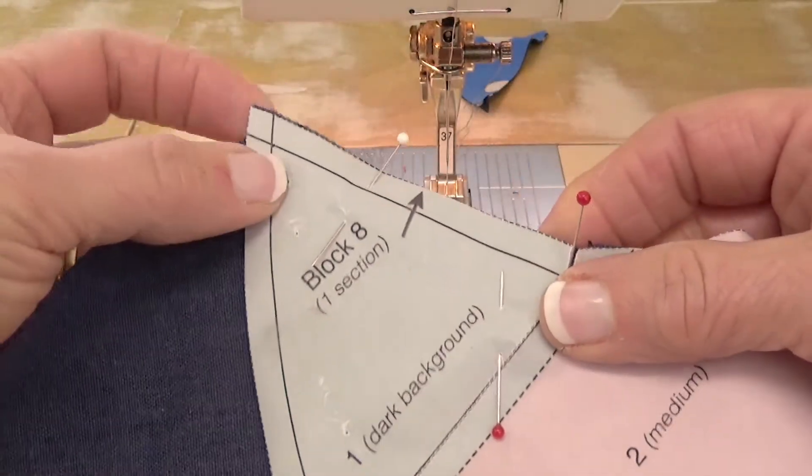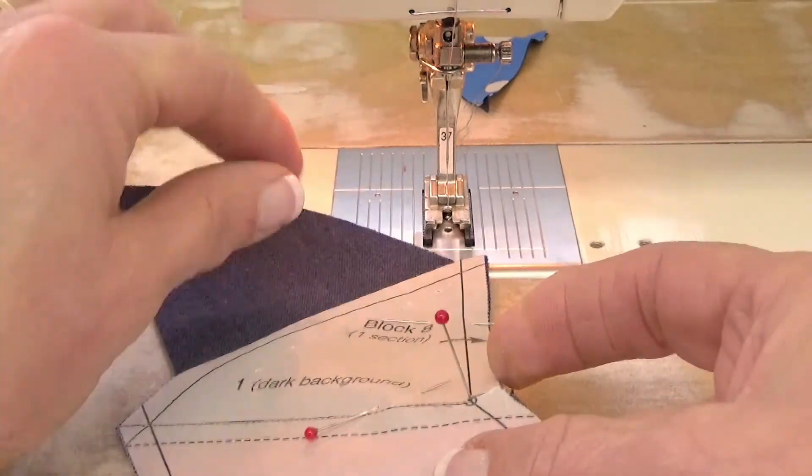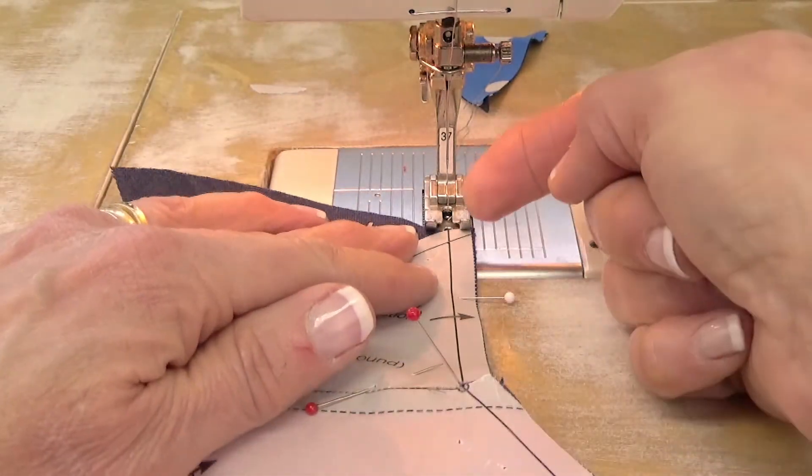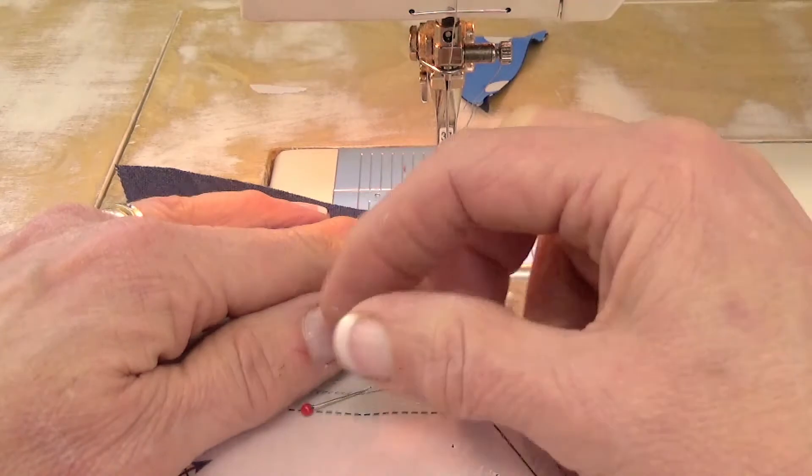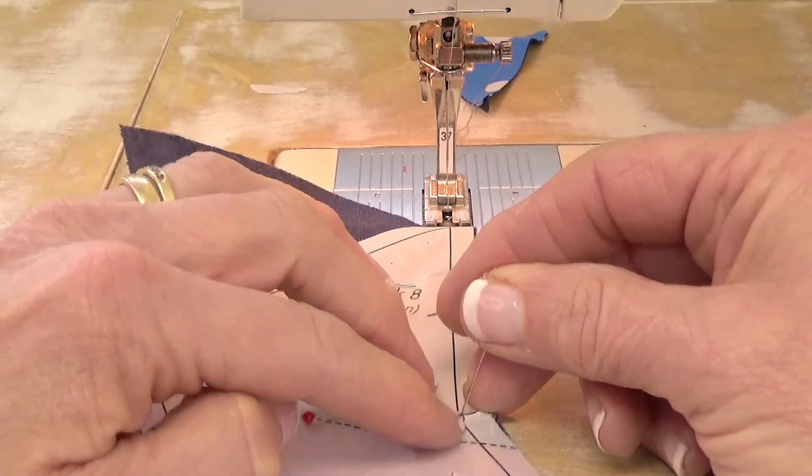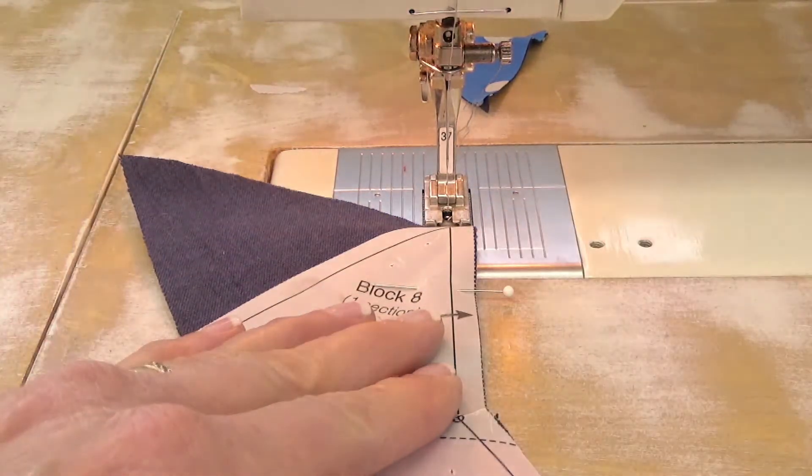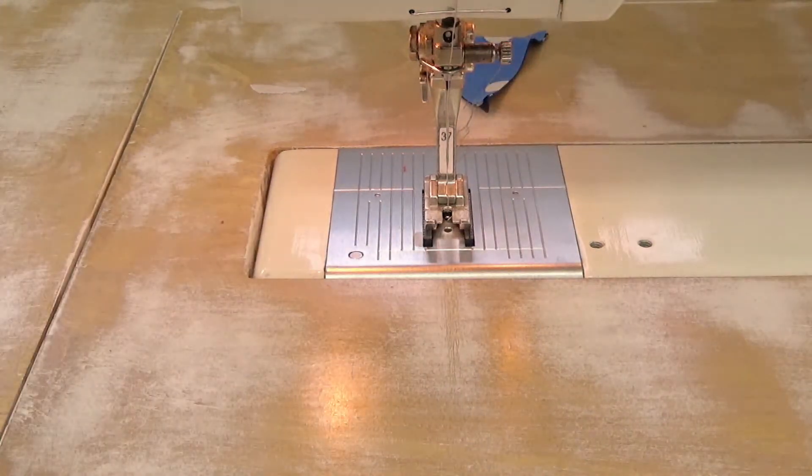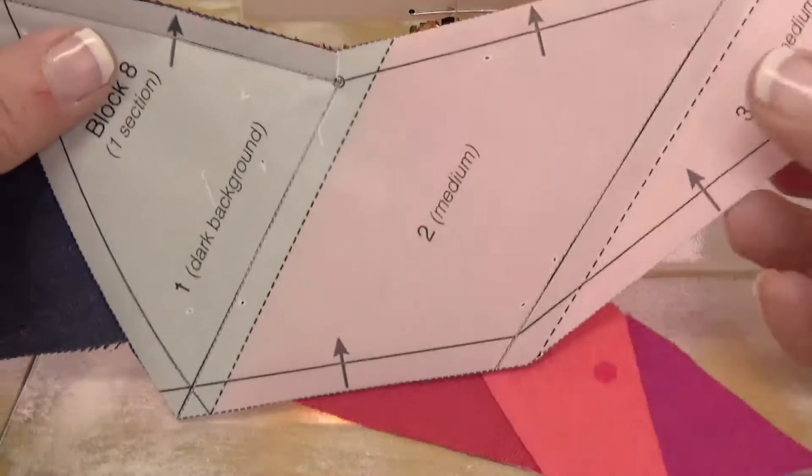The next thing you would do, and I've taken out my positioning pin already, and I'm ready to sew. So I would sew this to the circled point, removing the pin when I need to, and backstitch. Then I would take that out of the machine, and I have one already ready.